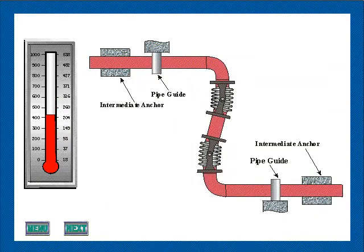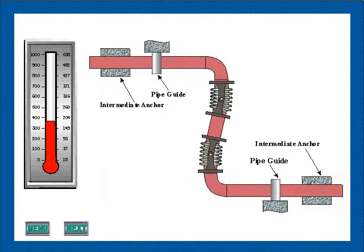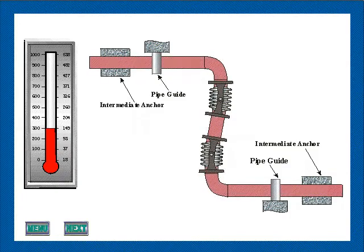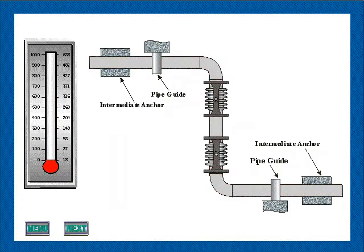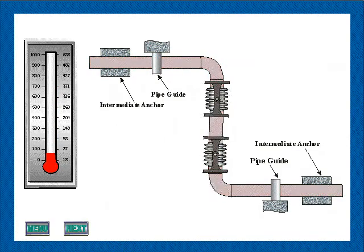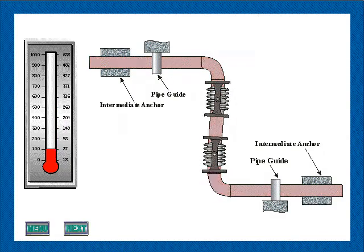In calculating guide clearances, consideration shall be given to the fact that the thermal expansion of the offset piping leg containing the expansion joints will be partially offset by the reduction in length resulting from the displacement of the center pipe section. This effect may be neglected only where the distance between the hinge pins is very large and the lateral displacement is small.